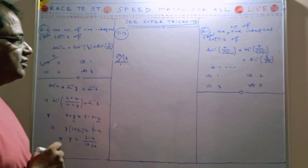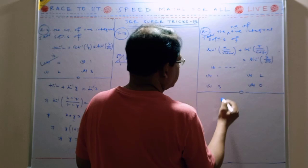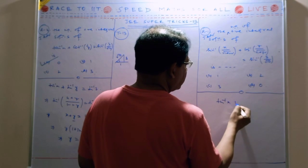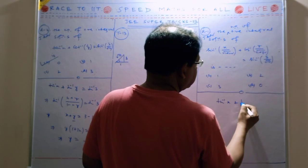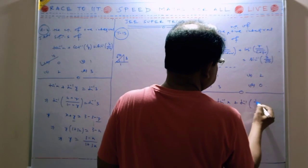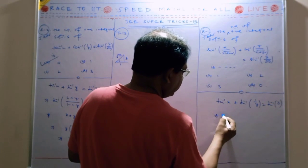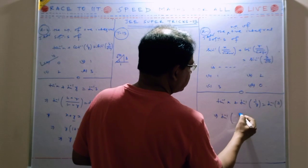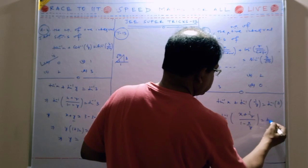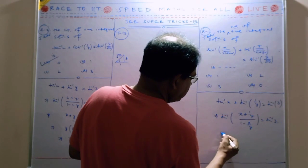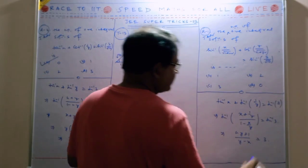So this is the right option. For this one, when you take tan, tan inverse x plus tan inverse cos (1 by y) equals tan inverse 3. So tan inverse of (x plus 1 by y) divided by (1 minus x by y) equals tan inverse 3. Similarly, (xy plus 1) divided by (y minus x) equals 3.